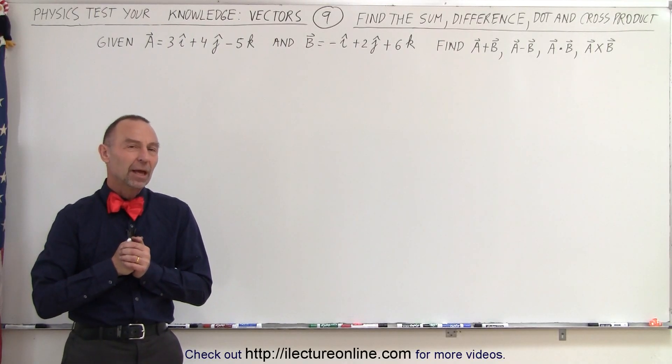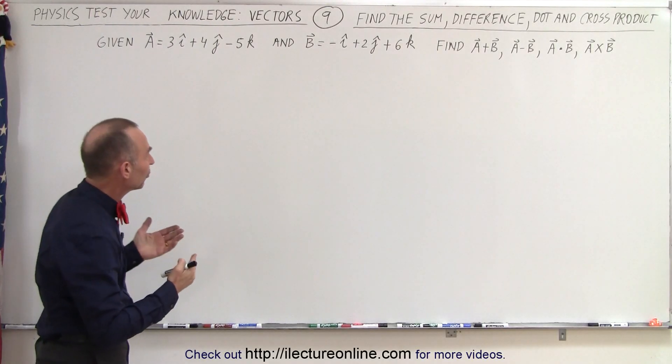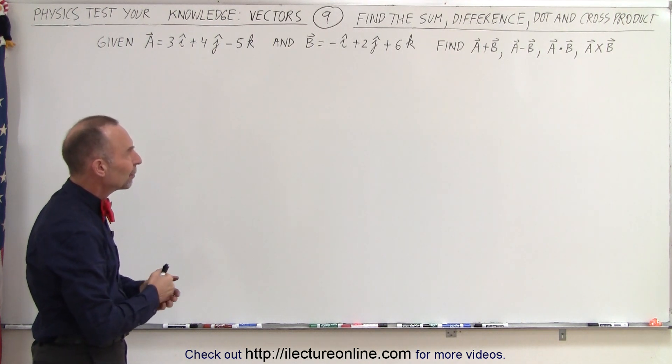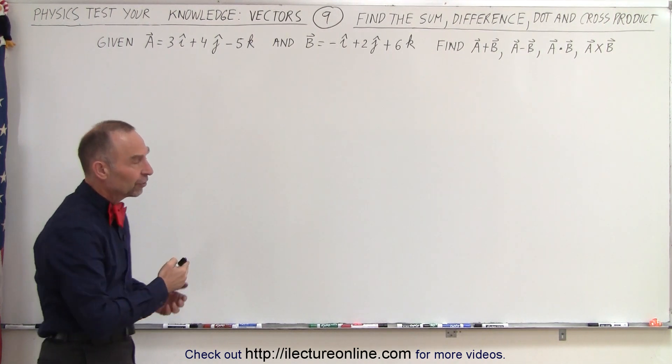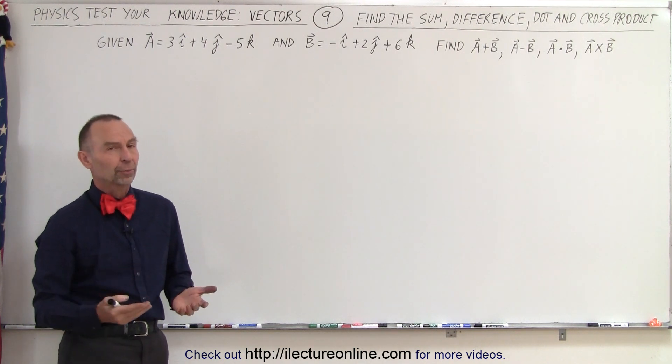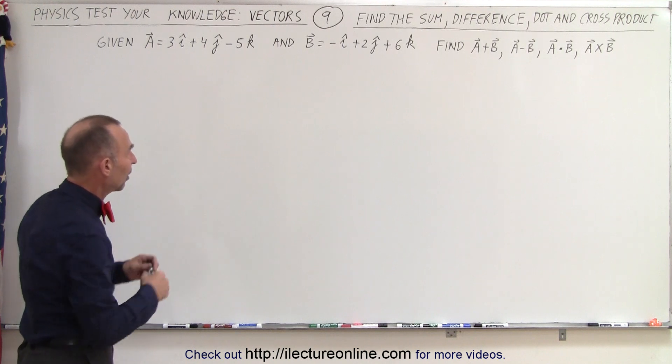Welcome to our lecture online. Now, when we're given two vectors with three components, i, j, k components, can we find the sum, the difference, and the two types of product, the dot product and the cross product? We should, and this is how we do that.